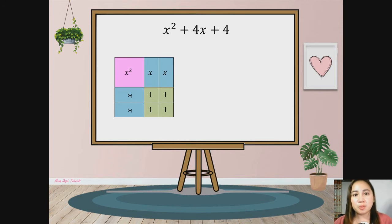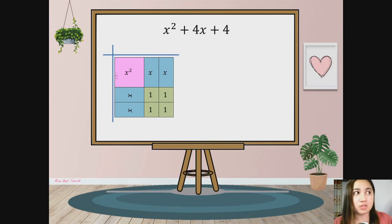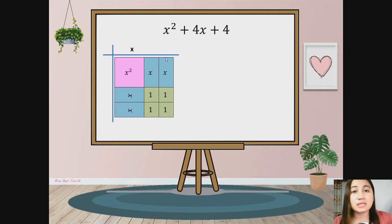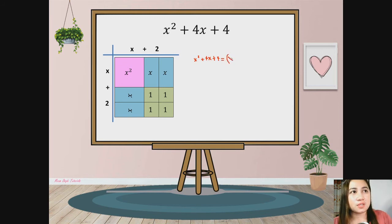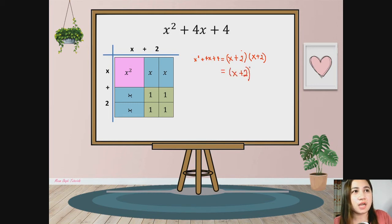Algebra tiles are not only used in representing polynomials — they are also used in factoring. To factor this perfect square trinomial using algebra tiles, we get the length of each side of this square. The length of the first square tile is x, plus the length of this side of the x-tiles, which is 1 plus 1, that means 2. So the whole side measures x plus 2. Since this is a square, the other side also measures x plus 2. Therefore the factor of x-square plus 4x plus 4 equals x plus 2 times x plus 2, or x plus 2 raised to the second power.